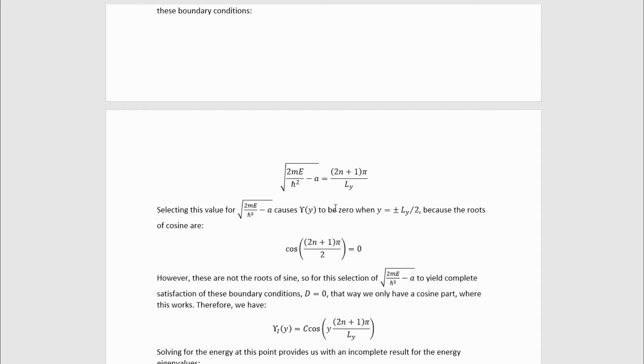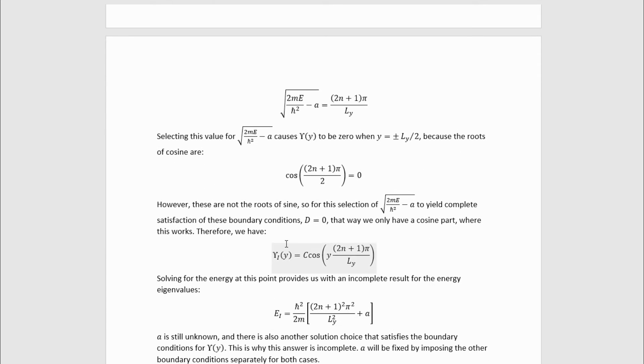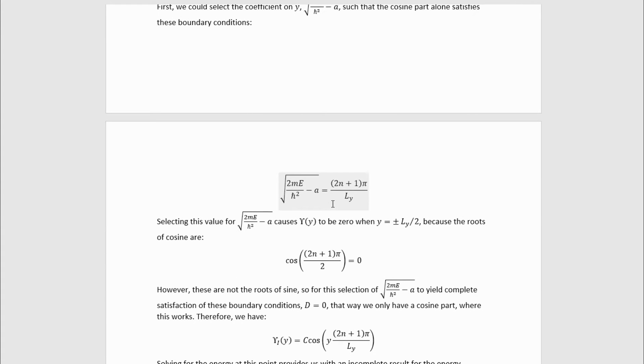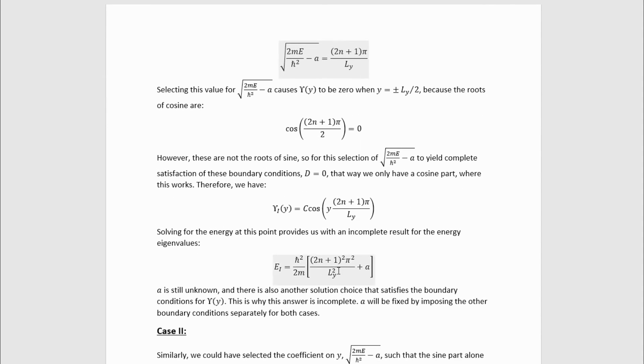So in order for this solution overall to satisfy the boundary conditions completely, if we select the value of this quantity to be this, we have to set the coefficient on sine to be zero so that that part doesn't interfere at all. And the fact that this only works with the cosine part is therefore okay because there's no sine part anymore. So for the first case, which I denote epsilon i, this is the y part of the wave function. Now we can take this relation here and solve for the energy for this case 1, and we get partial determination of the energy eigenvalues for case 1. This of course is incomplete because we still don't know a, and also we're ignoring case 2.